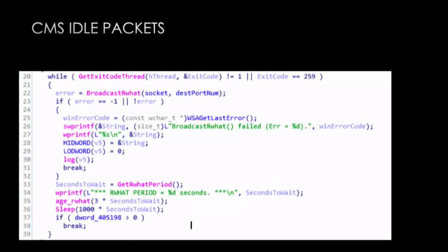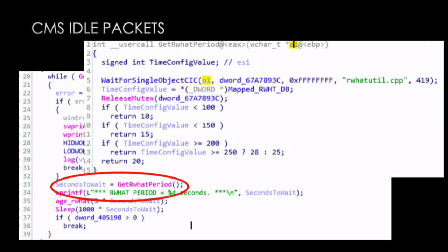Because the central monitoring station runs Windows XP and Windows 7, it was very simple to pull the binaries off and take a look at them to get a deeper understanding of these packets. With the help of IDA Pro, decompilers, and — we want to thank the vendor for leaving all the debugging symbols and names in the binaries, that was extremely helpful. This is the while loop that handles the packets seen on the network. At the top of the loop there's a function called 'broadcast R-WHAT' — that's the protocol being broadcast. Towards the bottom is the 'get R-WHAT period' function, which reads a value from a config file, multiplies it by 1000 in the Windows sleep function, confirming the ~10 second broadcast interval.